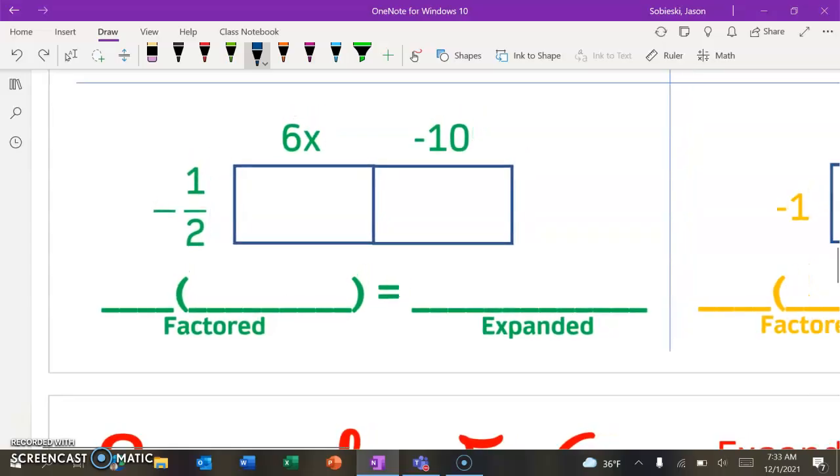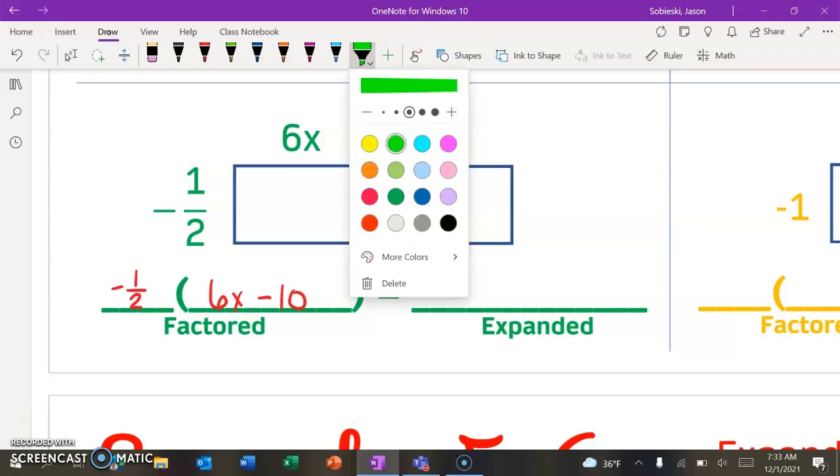We're going to take a look at the green one now. So let's see, again, expanded form is inside the rectangle. We don't know that, but we do know our factored form. So we know the negative 1/2 goes out front, and the 6x minus 10 is what's going to go inside of our parentheses. So this is just like we looked at yesterday. Now we just need to multiply.